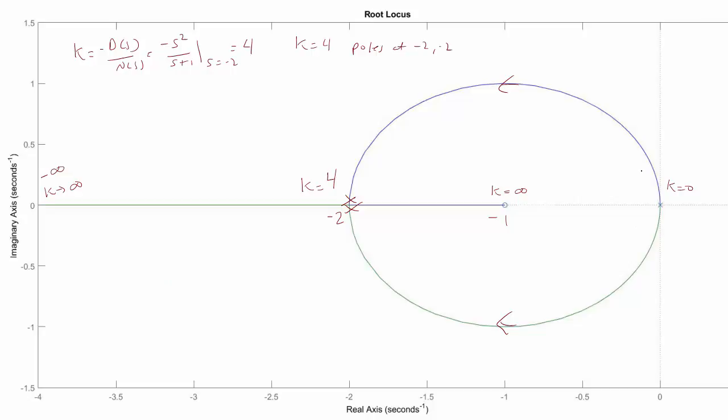And although we can tell from this that this system will be stable for all values of k greater than 0, we could also show the Routh-Hurwitz criterion to prove that. So Δ(s) is equal to s squared plus ks plus k. So when we build our table, we have 1, k here, k, zero here. So this is s squared, s to the 1, and s to the 0.